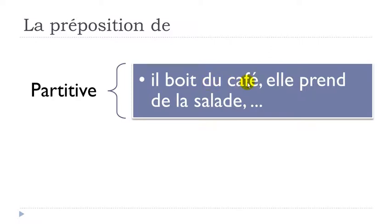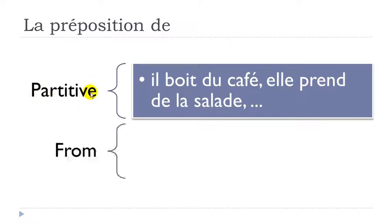Remember that we have the preposition de, but when it is combined with le, it becomes du — that's the partitive form. Il boit du café. Second example: elle prend de la salade — prendre means to take — de la salade means 'some salad.' So the first use of this preposition de is this partitive concept.